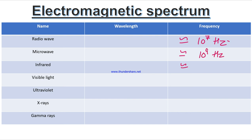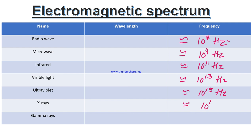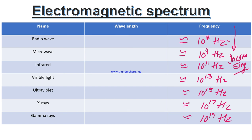You can notice a pattern in the frequency values: starting from around 10 raised to the power 7, add 2 to the exponent each time — so 7, 9, 11, 13, 15, 17, 19 hertz approximately. So as we go down the spectrum, frequency increases. This is the method to learn the wavelength and frequency of the electromagnetic spectrum.